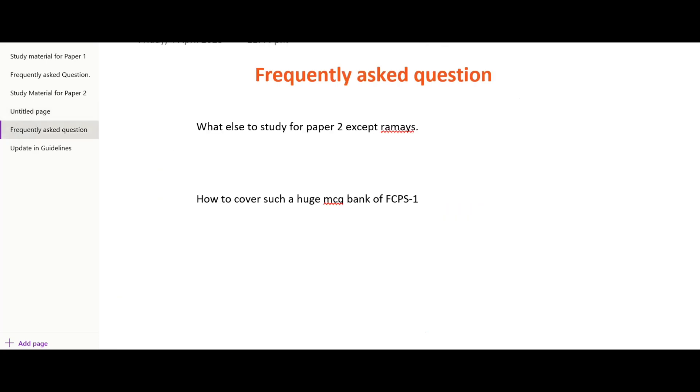And one most frequently asked question about Paper 2 is: what you have to study except Ramay's? First of all, you should know that Ramay's has everything related to Paper 2 material - anatomy, physio, and also now the pathology and clinical MCQs. If you want to study any book except Ramay's, then you should study Ramay's very well and you can do 2 to 3 times first.